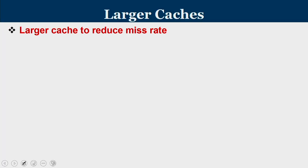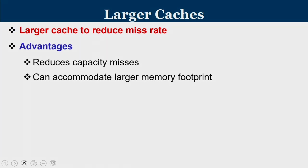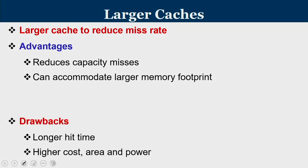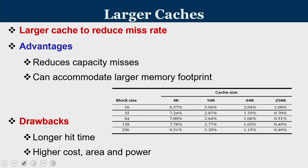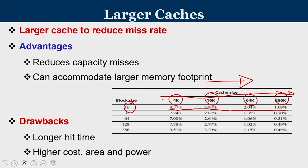The next technique to reduce miss rate is to go for a larger cache. When you go for a larger cache, you can reduce capacity misses because you can accommodate more of the memory footprint, at the drawback of longer hit time, higher cost, area, and power. A table for a representative application shows different cache sizes — 4 KB, 16 KB, 64 KB, and 256 KB — with miss rate going from 8 to 3 to 2 to 1 as cache size increases. For a given cache size, varying block size shows misses drop and then rise again.